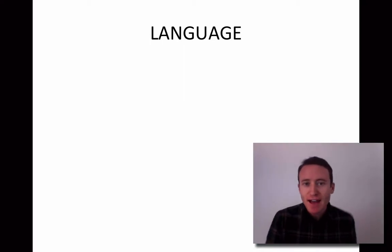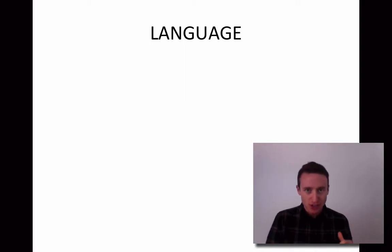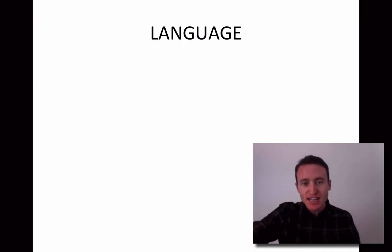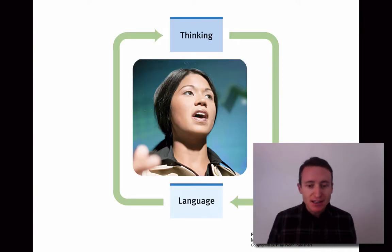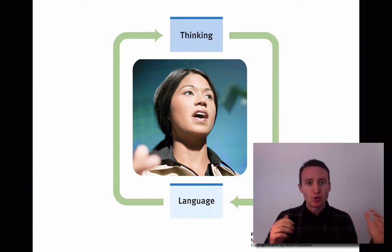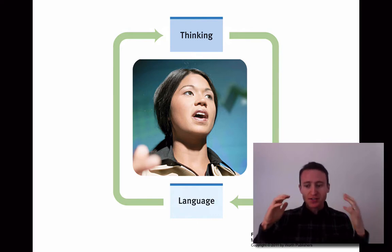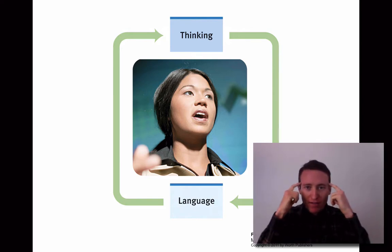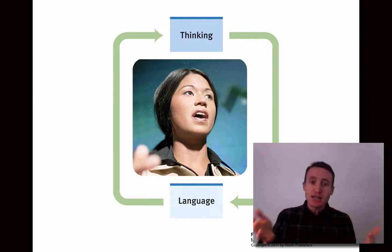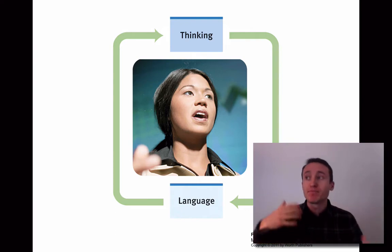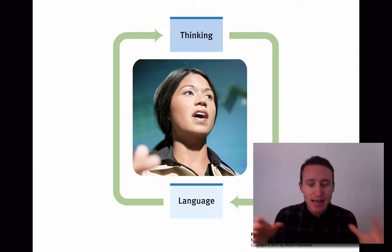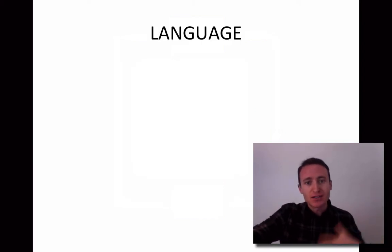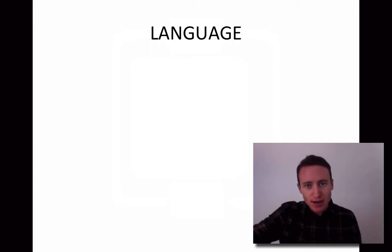Language is a fascinating concept in psychology, and one of the reasons it appears in this chapter is because there is a bidirectional relationship between language and cognition. As we get more advanced in our ability to think, that allows us to communicate in more advanced ways. Thinking and communicating go hand in hand. In this video, we're going to focus on language and language development, covering the more general aspects.